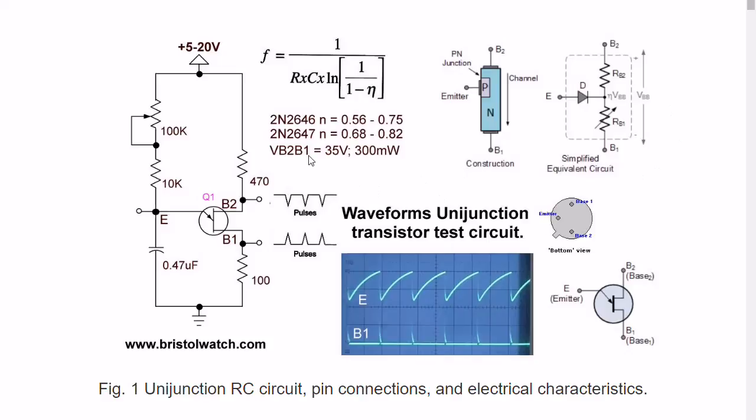Let's look down closer. One thing: we will be dealing with a concept known as intrinsic standoff ratio. Intrinsic standoff ratio depends on the resistance of RB2 and RB1.